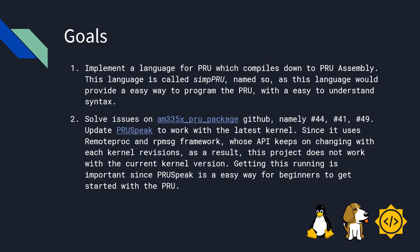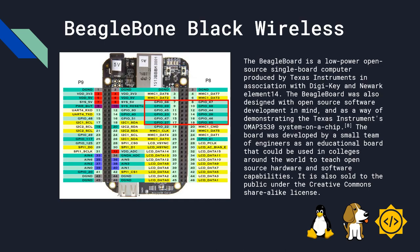The BeagleBoard is a low-power open-source single board computer produced by Texas Instruments in association with DigiKey and Element 14. The BeagleBoard was also designed with open-source software development in mind and as a way of demonstrating the Texas Instruments OMAP3530 system on chip. The board was developed by a small team of engineers as an educational board that could be used in colleges around the world to teach open-source hardware and software capabilities.